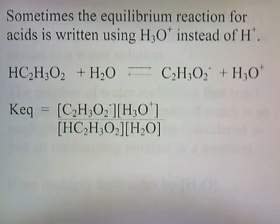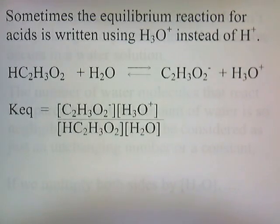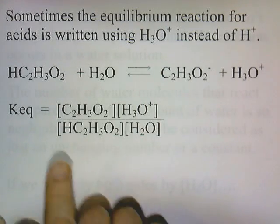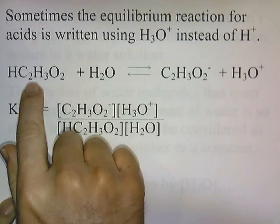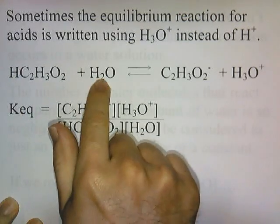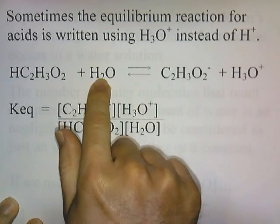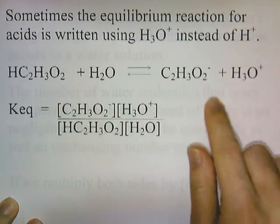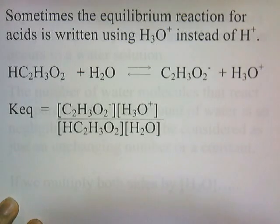Sometimes the equilibrium reaction for acids is written using the hydronium ion, H3O+, instead of H+. In this case, you show the acid donating a proton to a water molecule to produce the hydronium ion and the acetate.